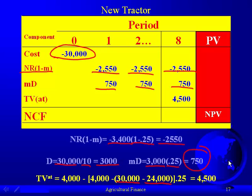$30,000 minus the $24,000 accumulated depreciation gives us a tax basis of $6,000. Since we sell it for $4,000, we have a capital loss of $2,000, which we multiply by 25%, reducing our taxes. That can be added to the $4,000 we sold the tractor for. So we have an after-tax terminal value of $4,000 plus $500 in tax savings, which gives us $4,500.